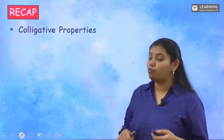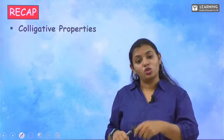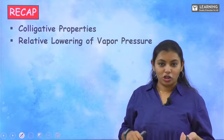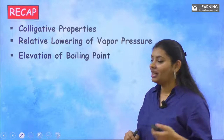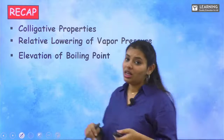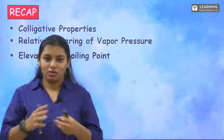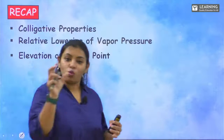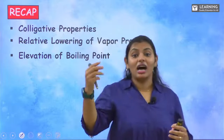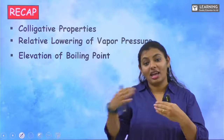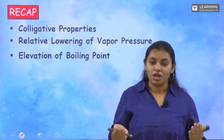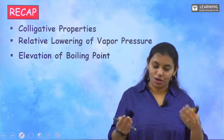The types of colligative properties we studied in the previous class were: relative lowering of vapor pressure — that's one property — and elevation of boiling point — that's the second property. We also studied how exactly these properties have an effect on the vapor pressure of the solution.